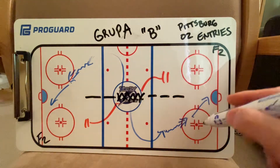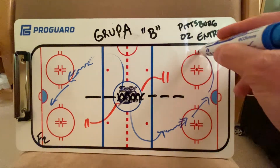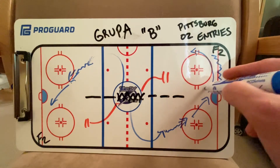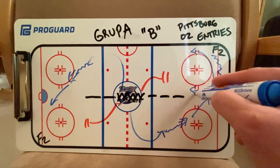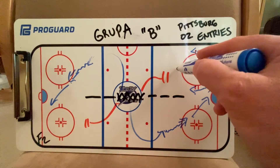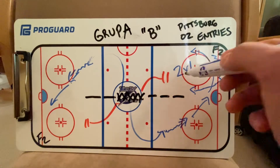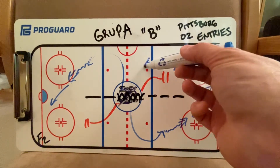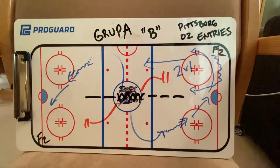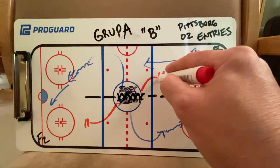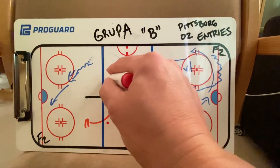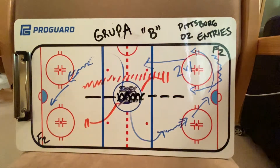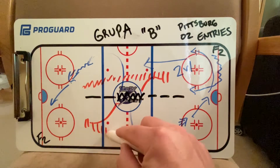When this player goes to the net, he's going to curl this way, this player is going to have the puck curling this way, and then they're going to attack down the ice with the defenseman going all the way back.